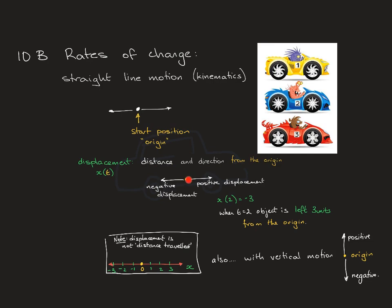Displacement is the distance and direction of a particular object from the origin. If the object is out to the right, it has a positive value — for example, positive three on the number line. If it goes out to the left to minus two, it has minus two. The displacement changes with time, so our function is displacement with respect to time. We use X for displacement, so X is a function of T. For example, X(2) = −3 means when T = 2, the object is three units in the negative direction.